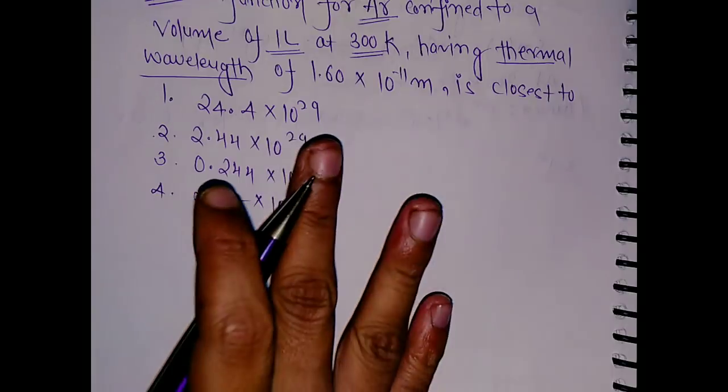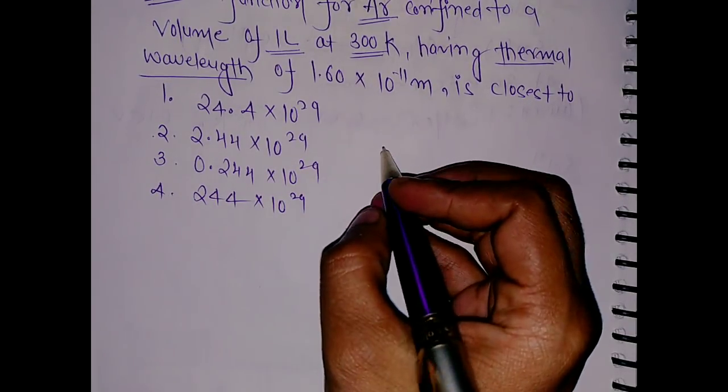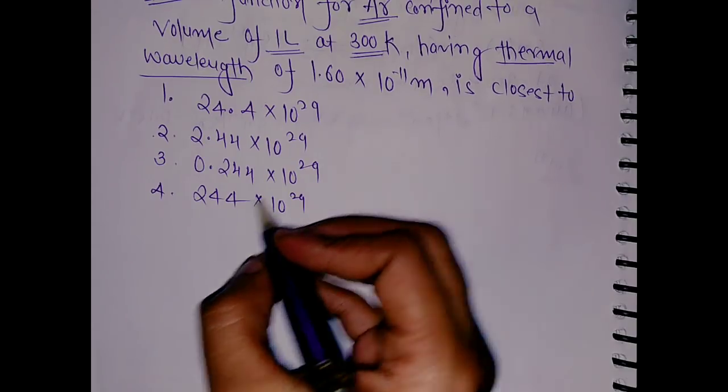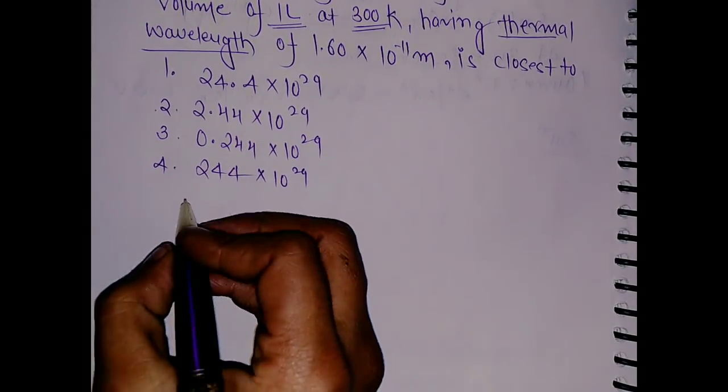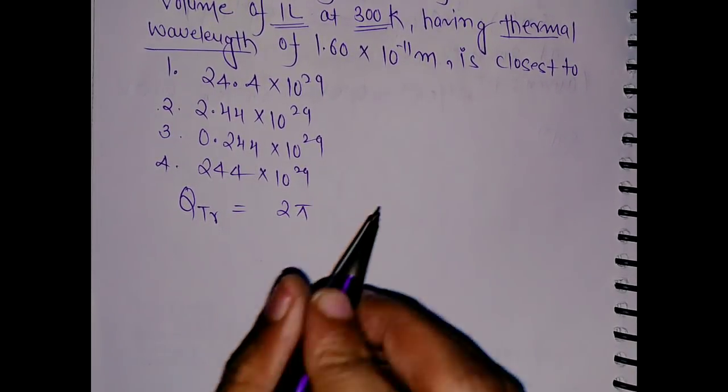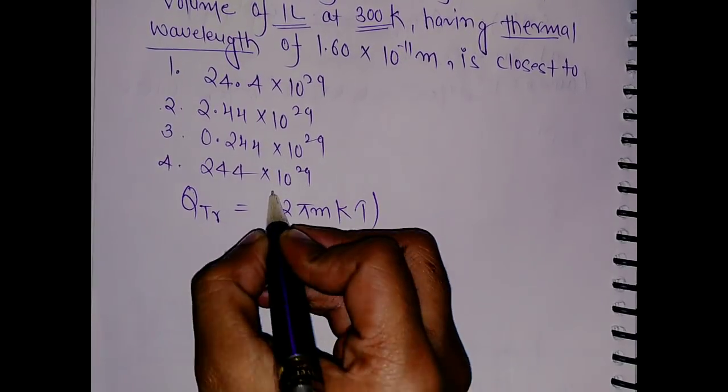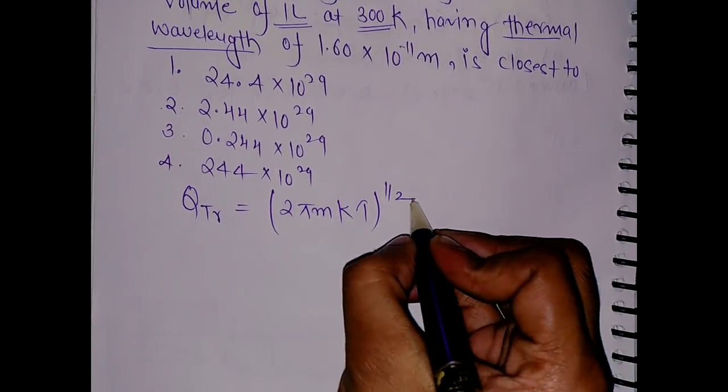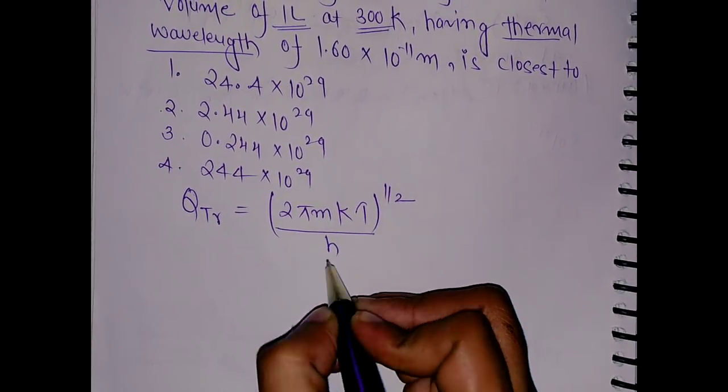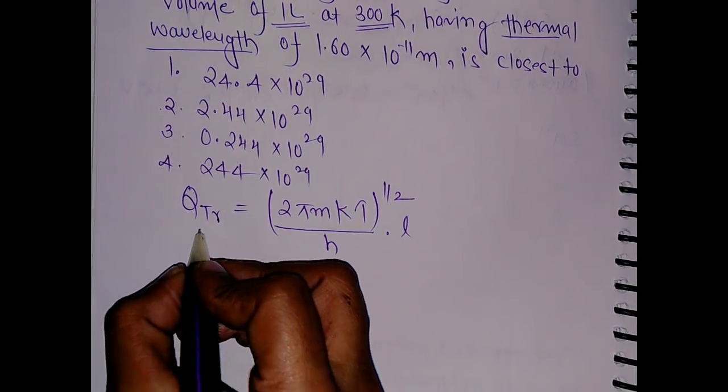First of all, you should know what is the translational partition function. It can be given as qt = (2πmkt)^(1/2)/h × length. This is for one dimensional.